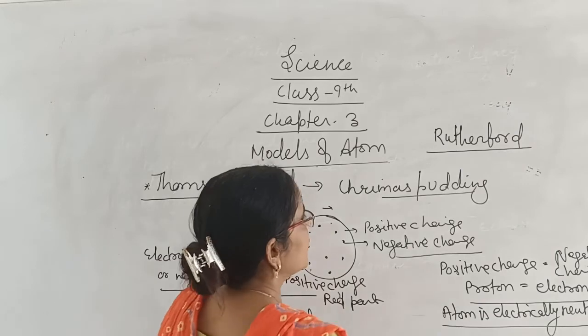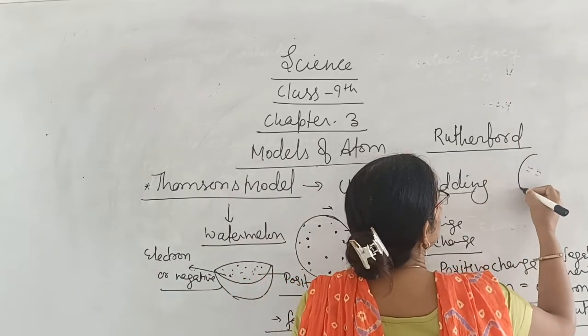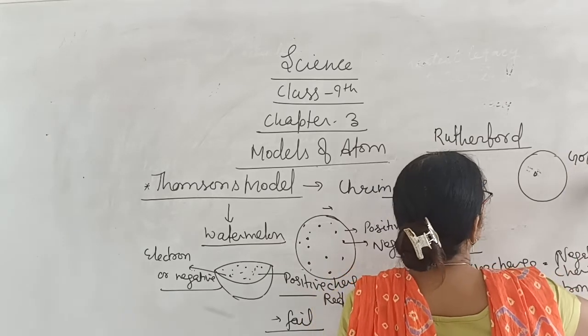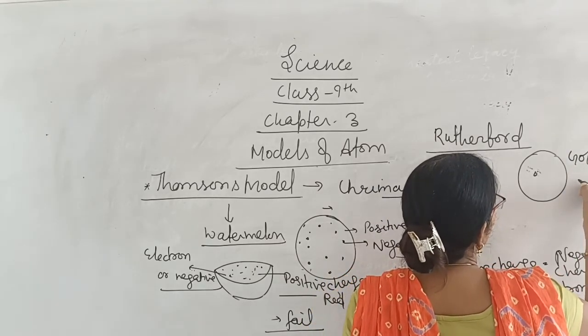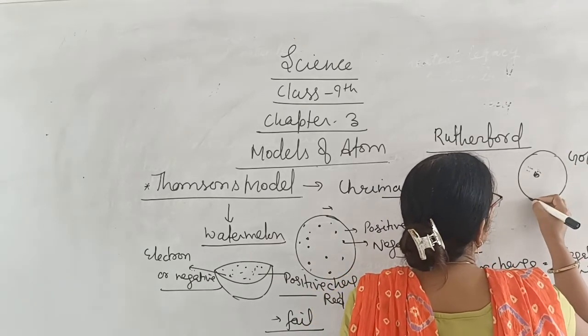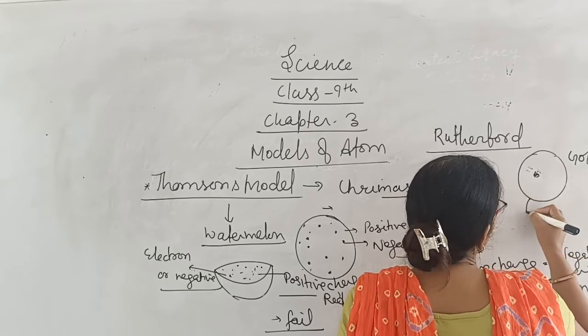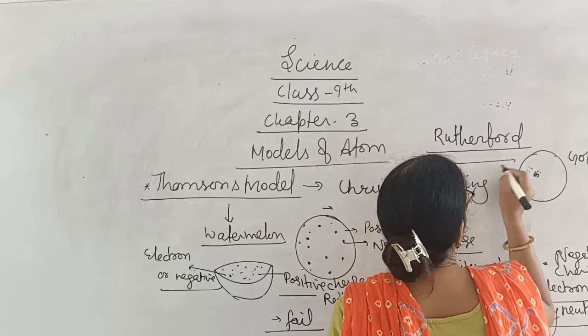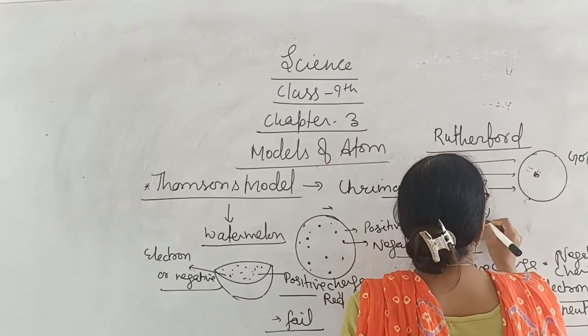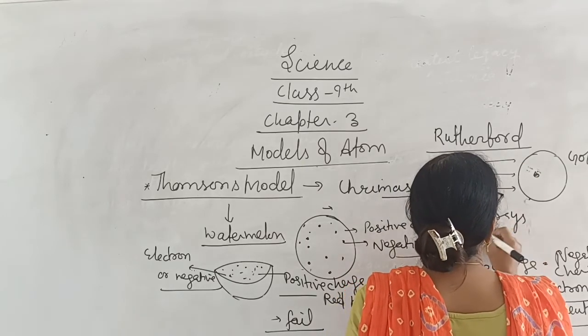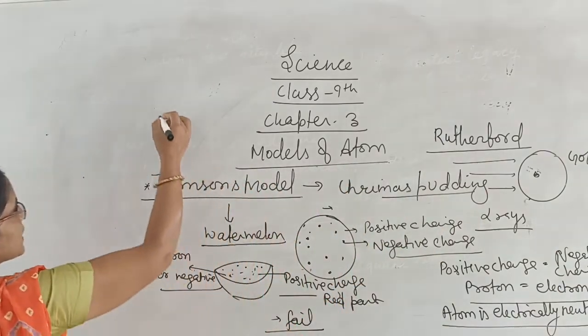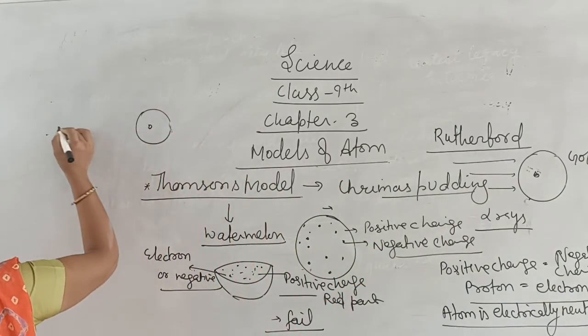Rutherford did the gold foil experiment. They took very thin gold foil and passed alpha rays through the gold foil.